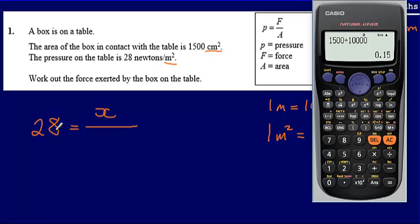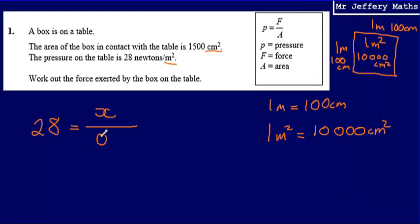So substituting in now, I've got 28 newtons per metre squared is equal to the force, which I'm trying to find, divided by the area in metre squared, which is 0.15.